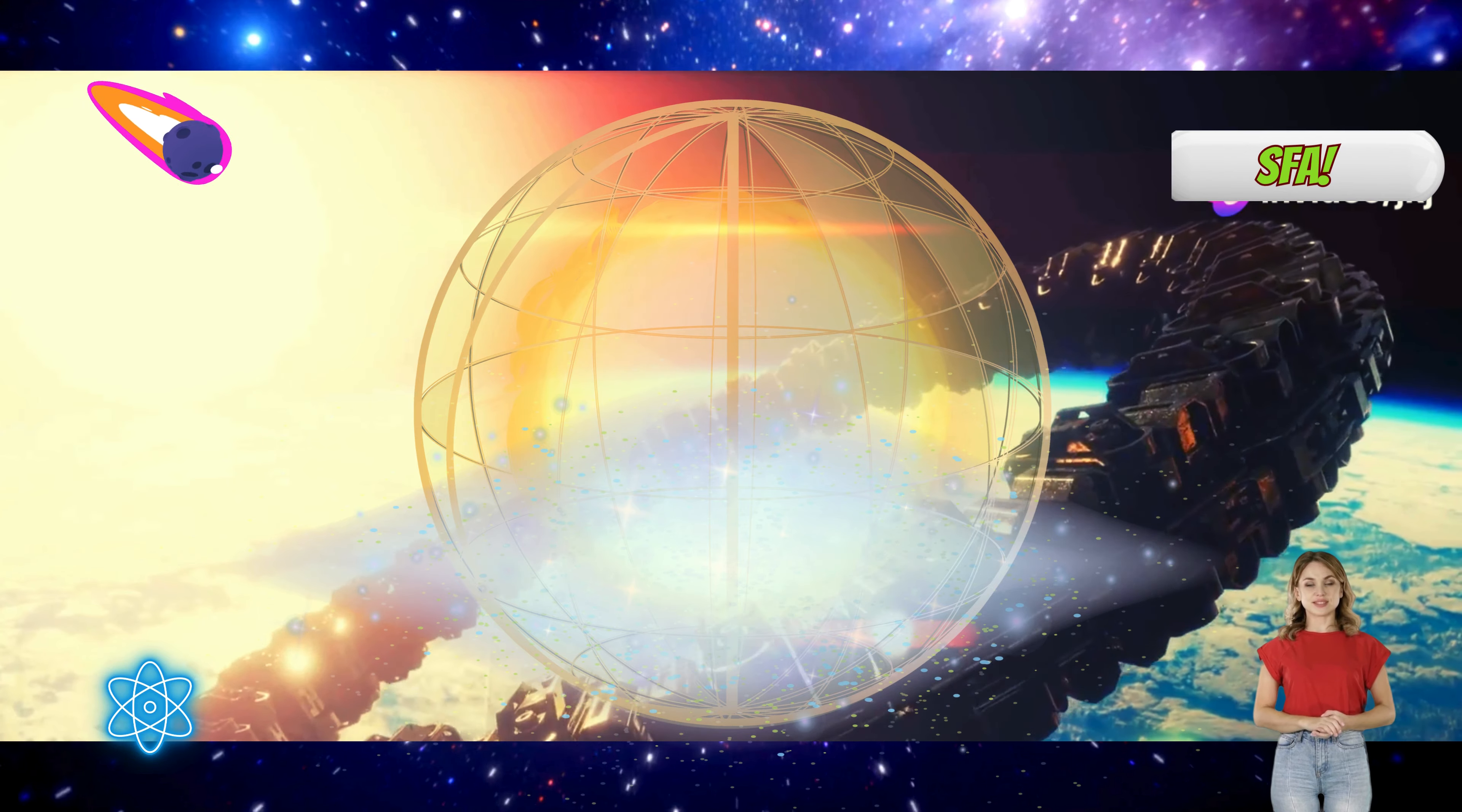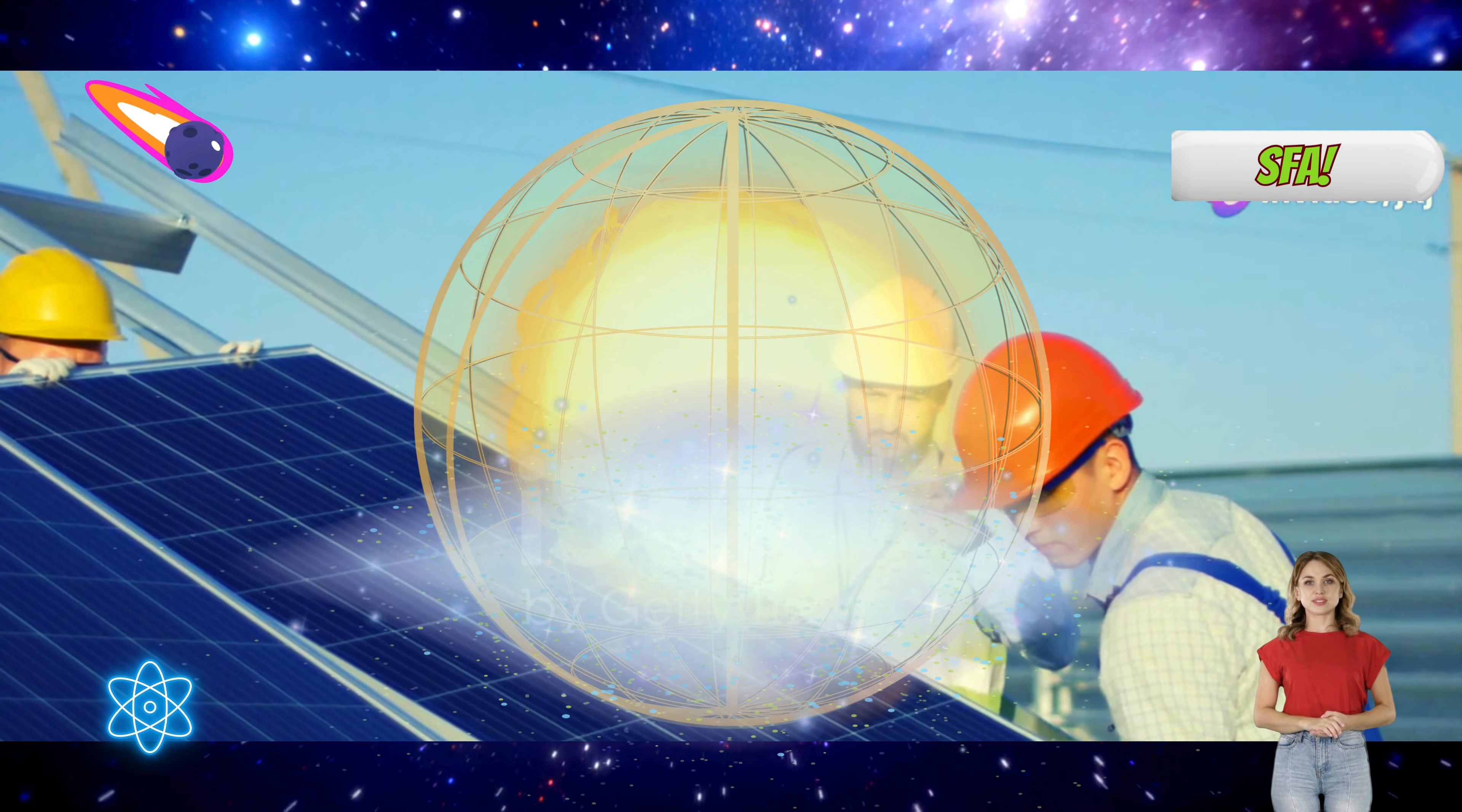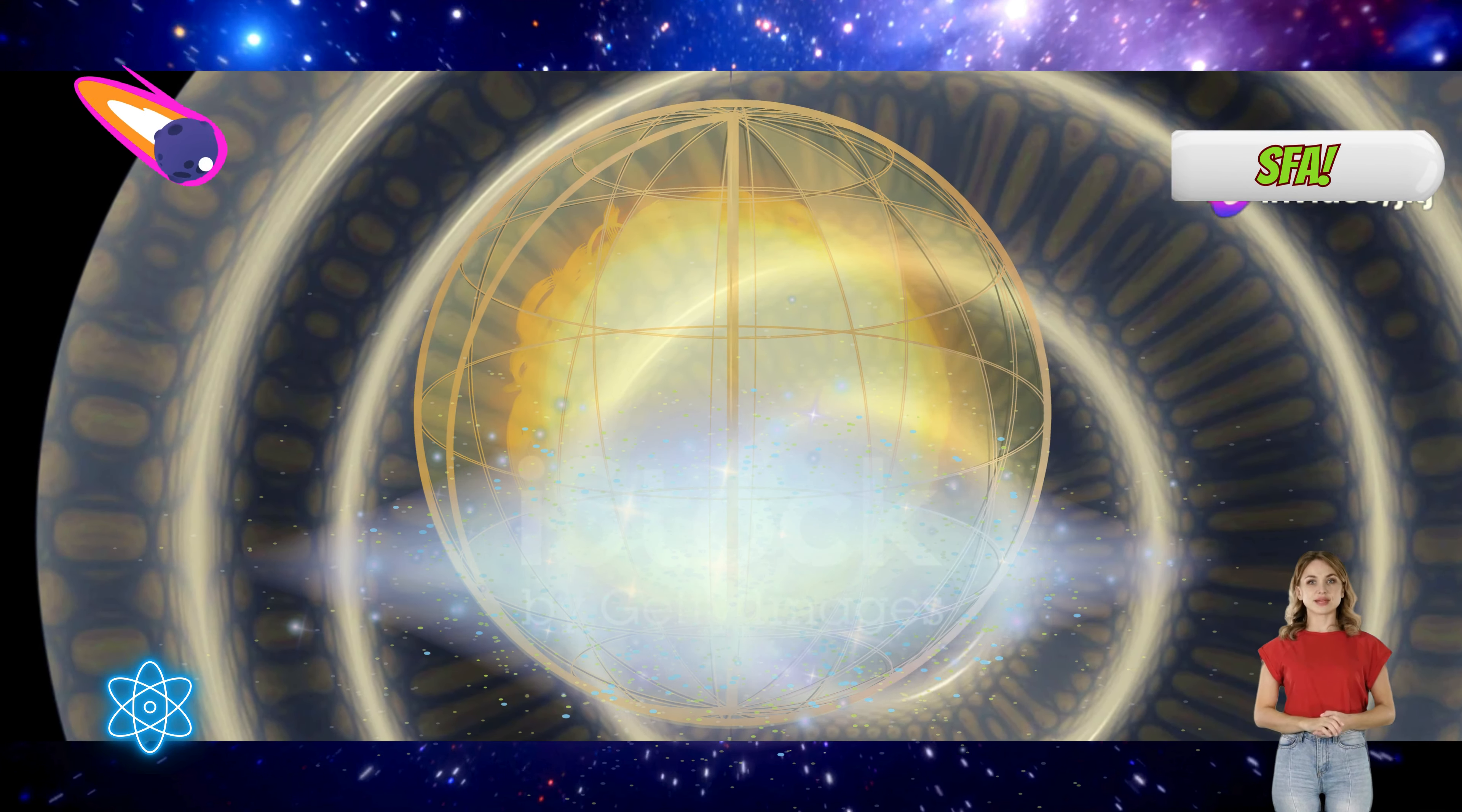The construction of a Dyson sphere would be a monumental undertaking, requiring unimaginable resources and engineering expertise. It would involve dismantling entire planets, perhaps even asteroids to provide the raw materials. The sphere itself would likely consist of countless individual components, meticulously assembled in orbit around the star. The scale of such a project boggles the mind, but the potential rewards are equally staggering.